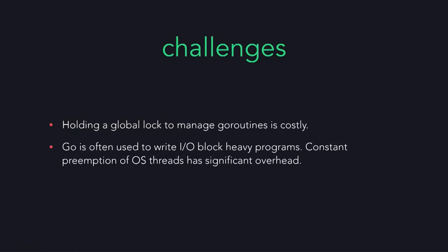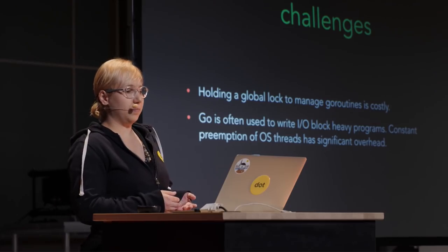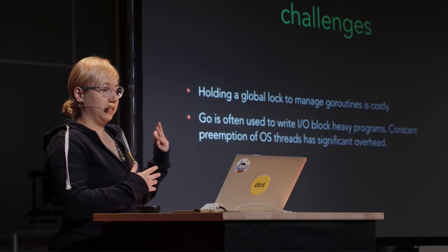There are two big challenges in this model. First, distributing the global runnable queue over OS threads requires a global lock, which is highly costly. Second, if the kernel ends up keeping an OS thread running in the lifetime of a Go routine context switch — which happens often — it will be as costly as having no lightweight threads at all. As a reminder, Go is a great language for writing servers, so Go programs are often I/O-bound and Go routines often run very briefly before getting I/O blocked. To deal with these challenges, the Go runtime scheduler switched to a model that depends less on the global queue and does a little spinning rather than letting threads go and get preempted.